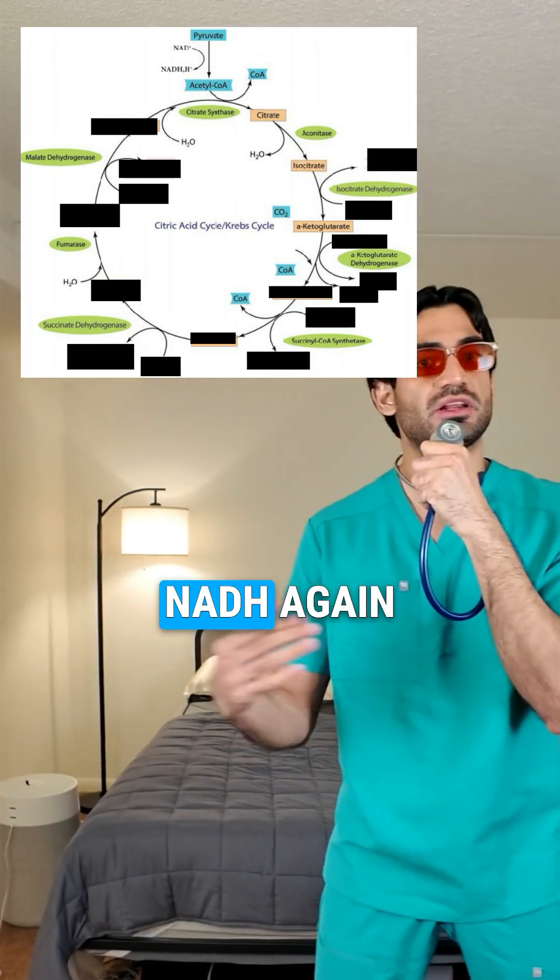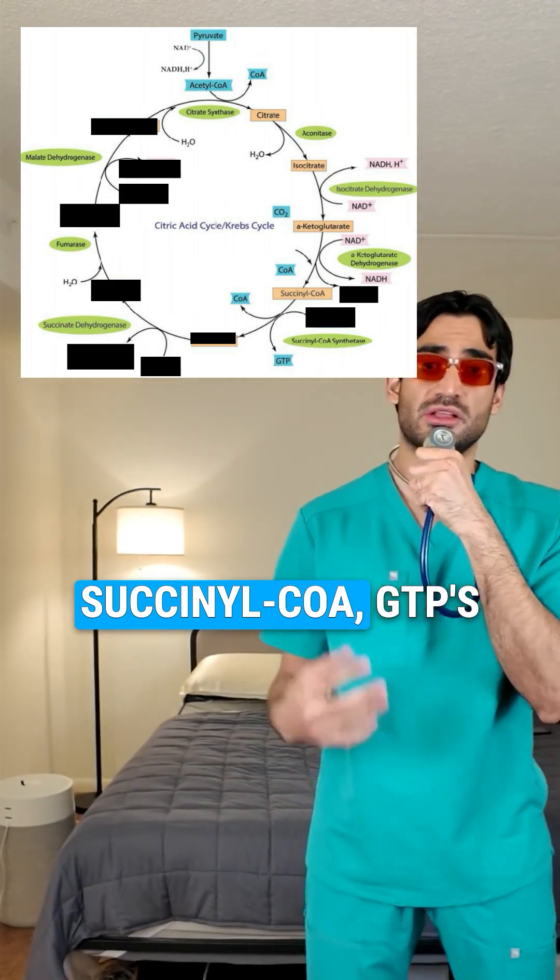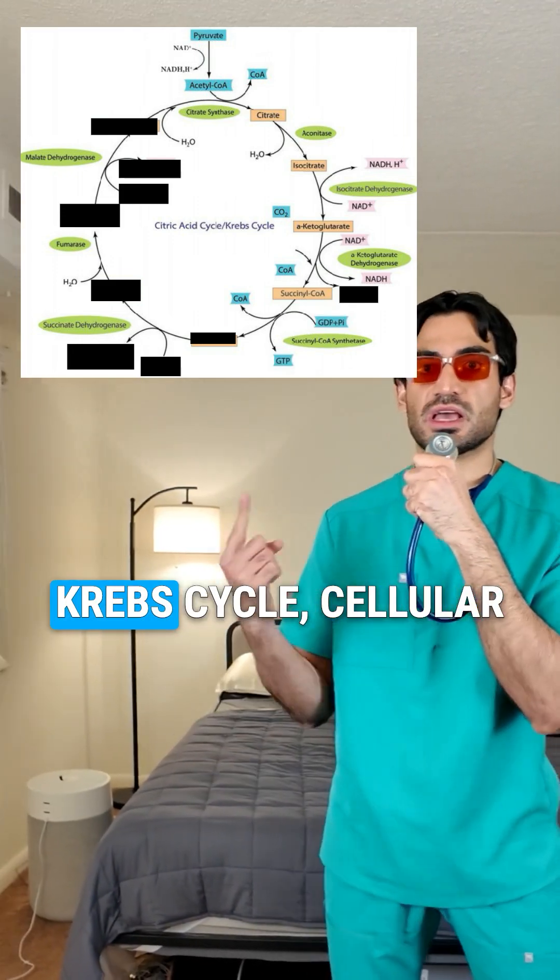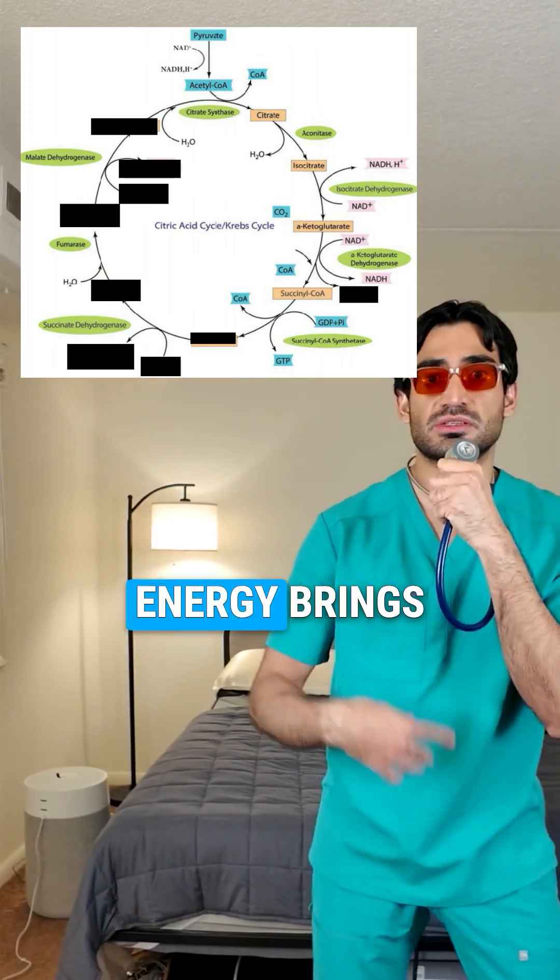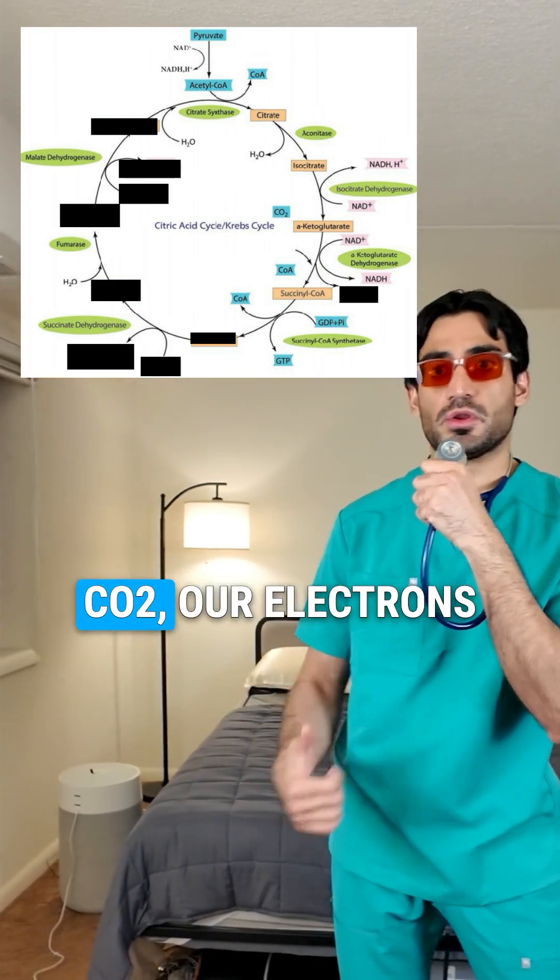Alpha-ketoglutarate and NADH again, succinyl-CoA, GTP's our friend. Spin that Krebs cycle, cellular superstar. Eight steps deep.